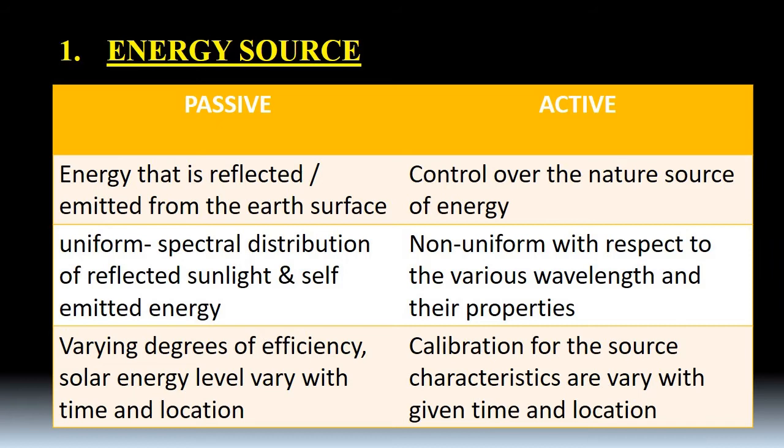In passive, there are varying degrees of efficiency. Solar energy level varies with the time and location because passive is absolutely natural. It takes energy from the sunlight only. Its source is the sun only. Then about the active, calibration for the source characteristics varies with the given time and location.